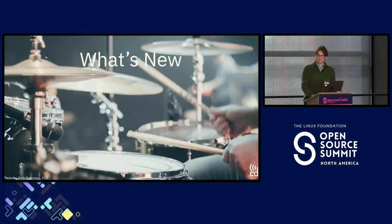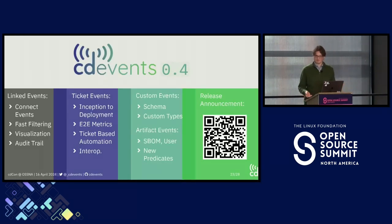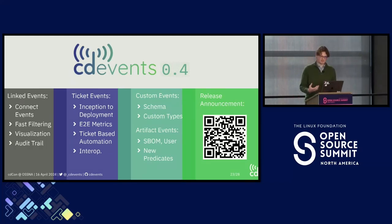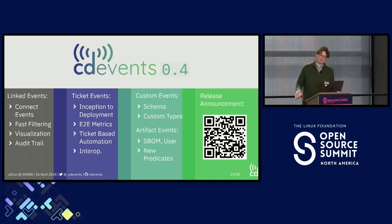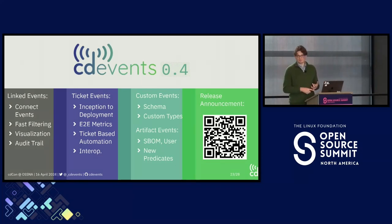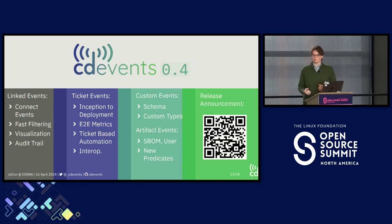Just last week we released CDEvents 0.4 with a bunch of great new features. Linked events allow you to do better things like visualizing your workflow, fast filtering of events, and connecting events for audit trails. We introduced ticket events to bring interoperability to that space, as well as custom events with the ability to refine schemas and introduce custom types for tools that need that. We also added SBOM support to artifact events — that was key for integration with GUAC — and introduced new predicates about artifacts.